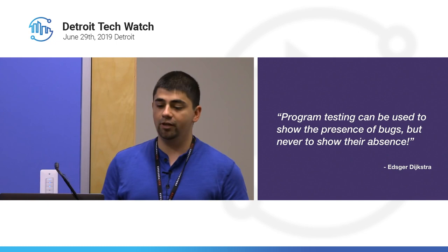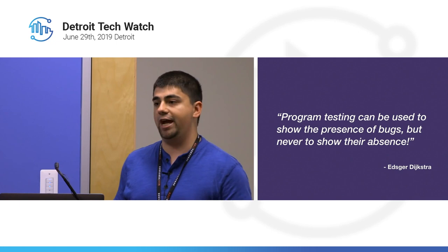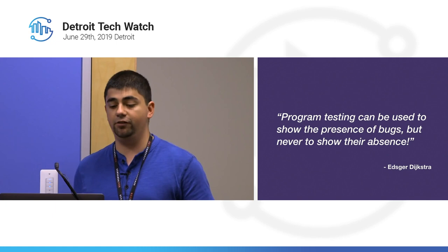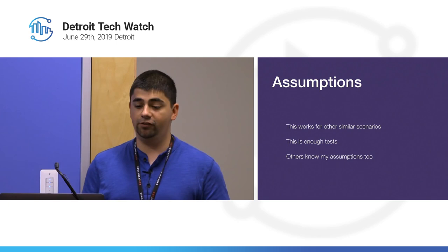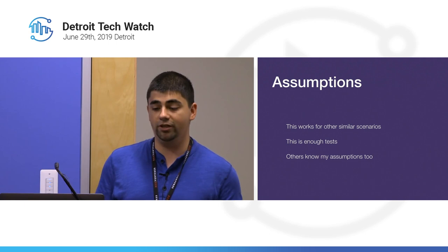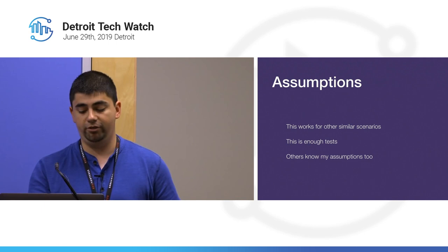Here's a great quote by Dijkstra: 'Program testing can only be used to show the presence of bugs, but never to show their absence.' So we can only truly be confident in our code for the exact test scenarios we test for — the rest are just assumptions. We assume our test works for similar scenarios, that we wrote enough tests, and that people reading our tests know the assumptions we made.